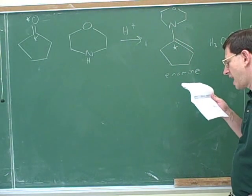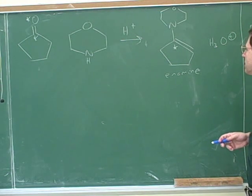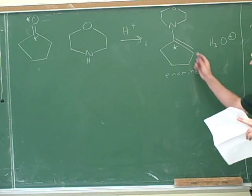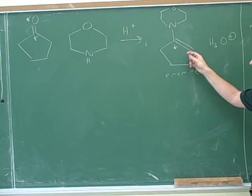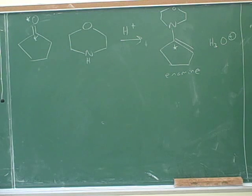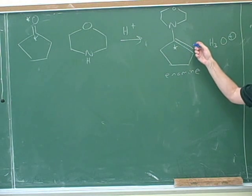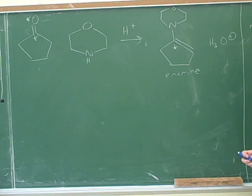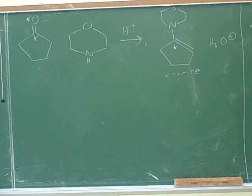We have to decide whether an enamine is going to be a nucleophile or an electrophile. In particular, this carbon here — this former alpha carbon — will be nucleophilic. So let's see if we can come up with some explanation for why this carbon would be nucleophilic. We've always expected carbon-carbon pi bonds to be somewhat nucleophilic. Even with alkenes we saw electrophilic additions, but this particular carbon is more nucleophilic than normal in an alkene.